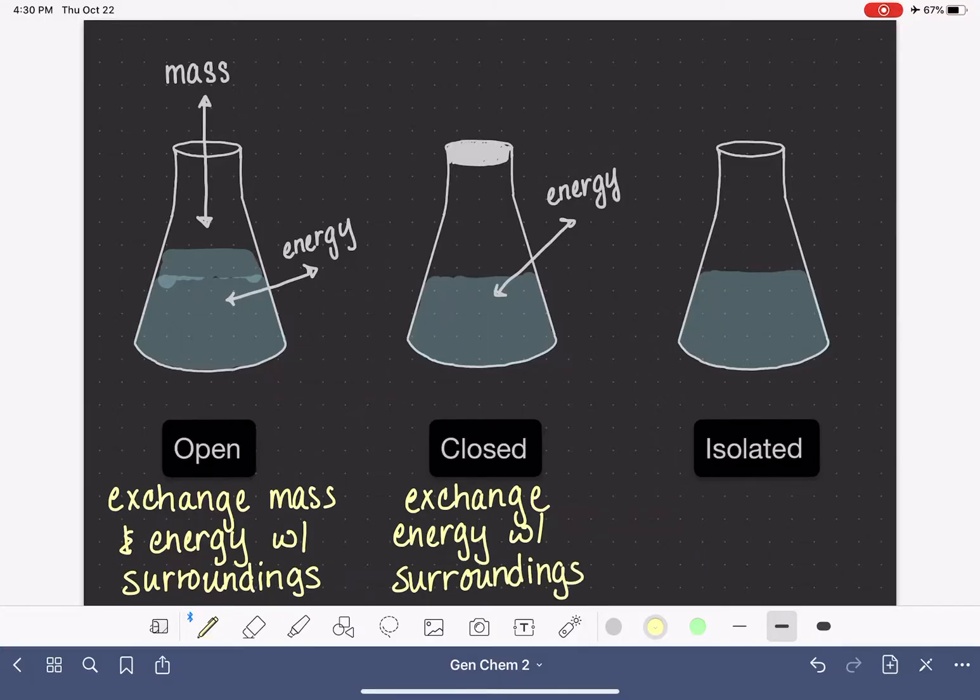Now the final type of system that we're going to talk about is an isolated system. And as you can kind of imagine watching the progression of how this goes, an isolated system is one that is completely, as the name implies, isolated from its environment. So that involves putting a lid on this so that nothing, so no mass can get out. So we're closing it up so that no mass can be exchanged.